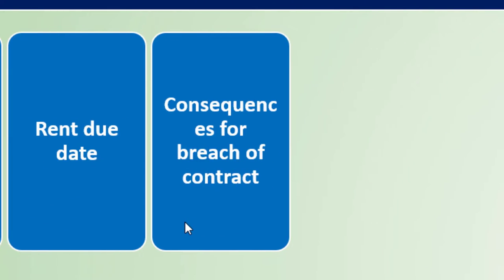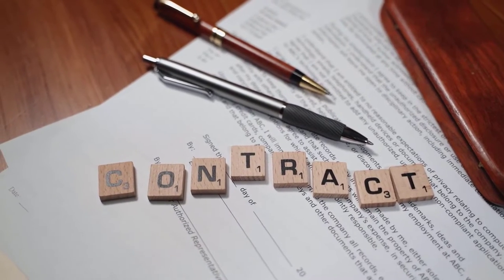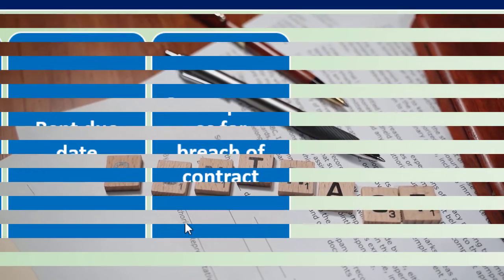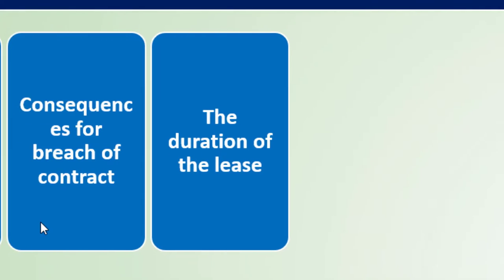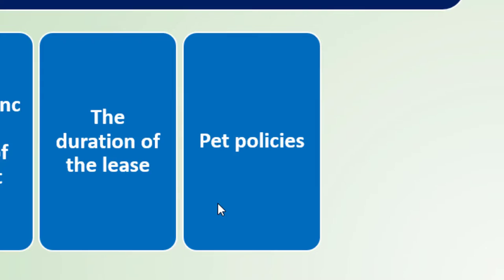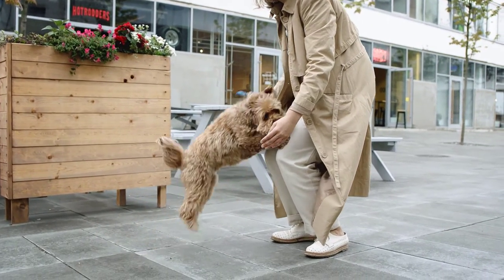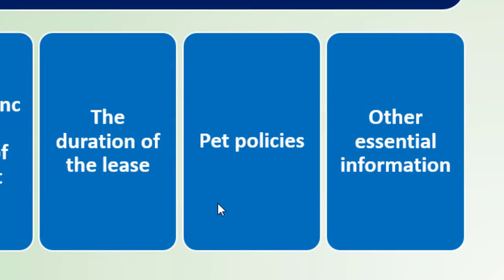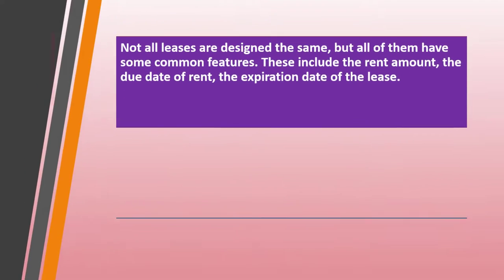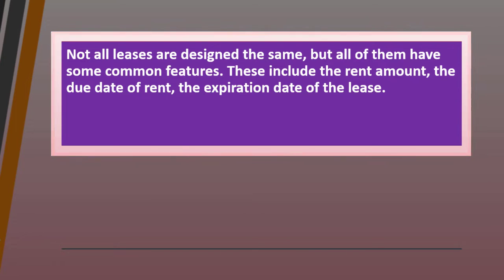The rent due date must be clearly defined, because if rent is late you may be subject to penalties and interest. Consequences for breach of contract cover what happens if you don't pay rent on time or at all. Pet policies are also commonly included — most rental properties specify what kinds of pets may or may not be allowed, along with other essential information.